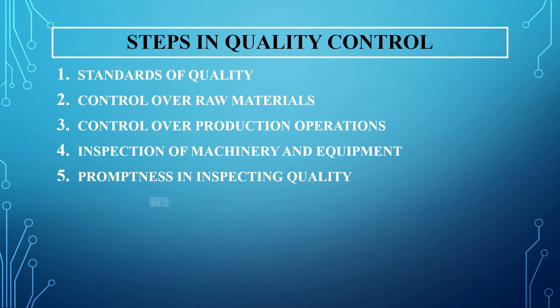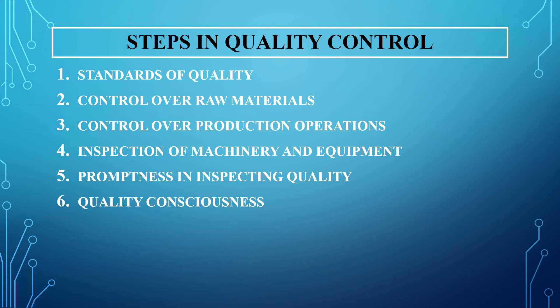The sixth step is quality consciousness. The main task of management here is to develop quality consciousness among the workers. Workers should be conscious, and management should ensure that all workers are well aware of how important it is to take care of the quality of the product. If employees are not conscious and are just manufacturing without checking whether what they produce is of good quality, your quality control does not work. Quality consciousness is an awareness that both managers and employees have while producing the product, and when they are aware, quality control works very effectively.